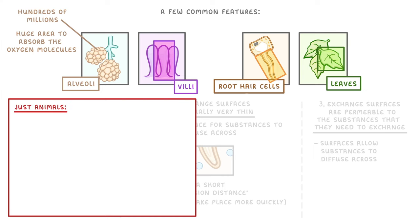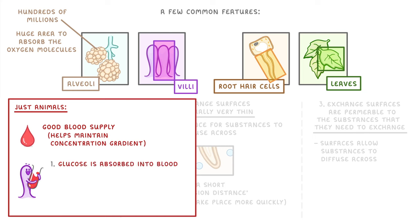If we look at just animal exchange surfaces now, another really important feature is a good blood supply, as this helps maintain a concentration gradient. For example, having a good supply of blood to your villi means that as soon as some glucose is absorbed into the blood, that blood will quickly be taken away and replaced with blood that doesn't yet have lots of glucose in it. This helps maintain a concentration gradient between the lumen of the intestines and the bloodstream, so that more glucose can continue to diffuse down its concentration gradient into the blood.